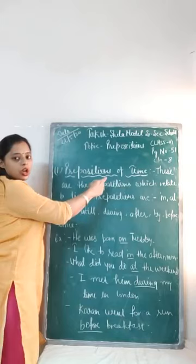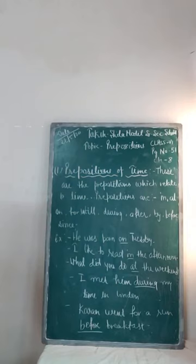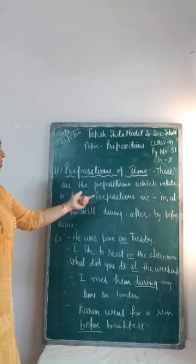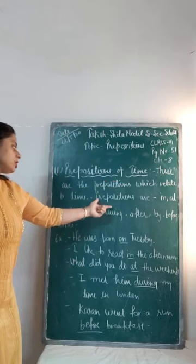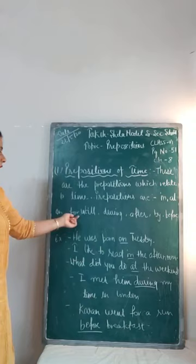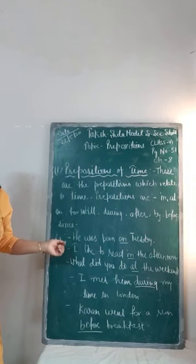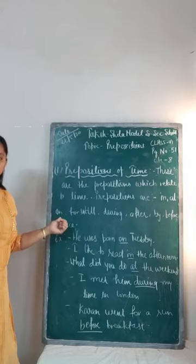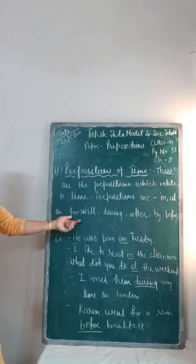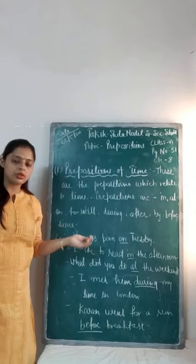First, prepositions of time. Prepositions of time indicate the time or the duration — these are prepositions which relate to time. We use prepositions like in, at, on, for, until, during, after, by, before and since. We use 'on' for the days of the week like Sunday, Monday, Tuesday, for parts of those days like Sunday morning, Monday afternoon, and with certain dates. For example: 'The wedding is on 1st July.'